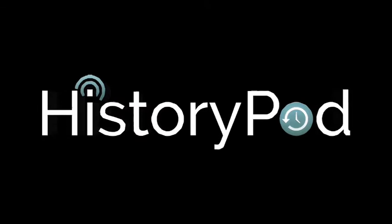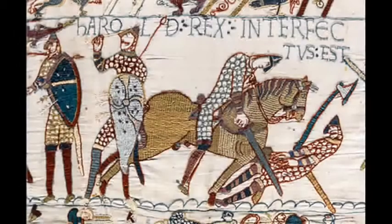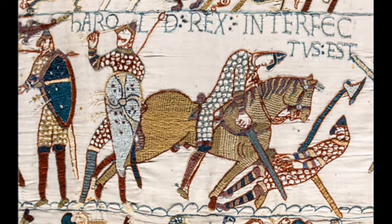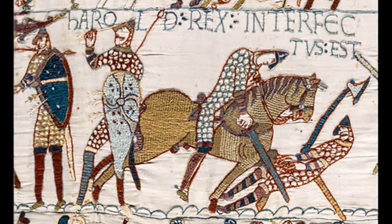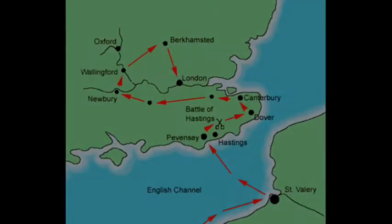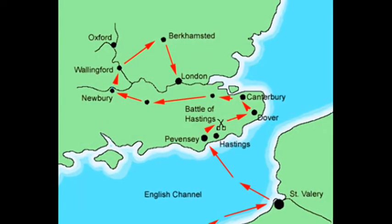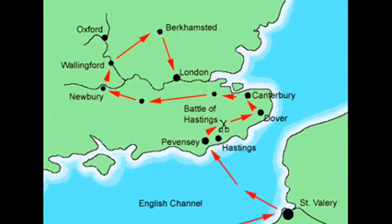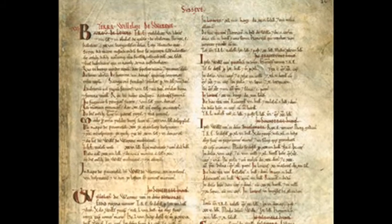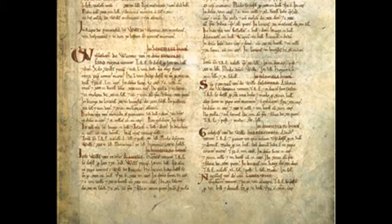Hello and welcome to HistoryPod. On 14 October 1066, the Battle of Hastings was fought between Duke William II of Normandy and the Anglo-Saxon King Harold Godwinson. To call the battle the Battle of Hastings is actually misleading, since it was fought seven miles away outside the town of Hastings. Its true location is near the modern town of Battle, although the 1087 Domesday Book ordered by William the Conqueror did describe it as the Battle of Hastings.